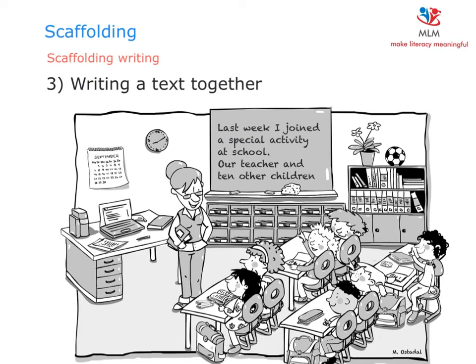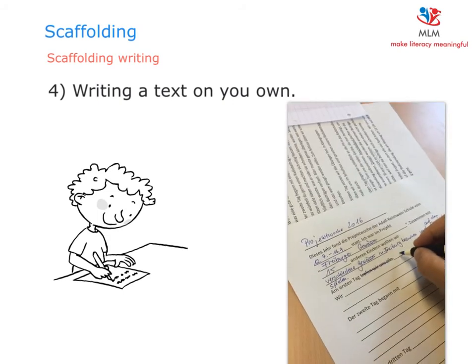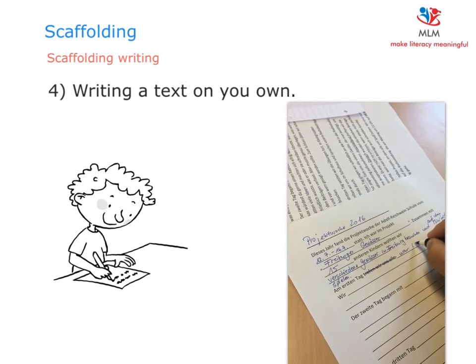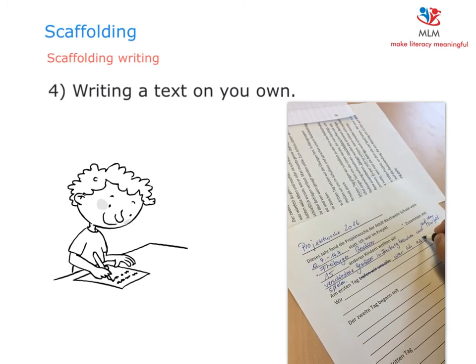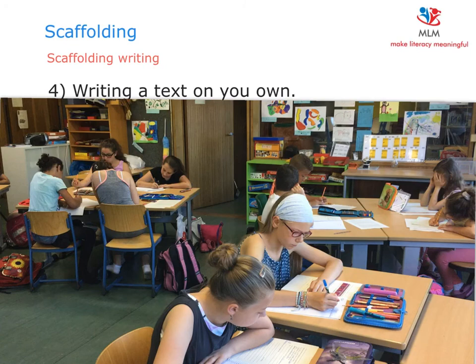The third step is to write a text together and to remind your students of the genre-specific aspects of this text. The last step is that students write their own text. Some of them might still get some extra support to do that, while others might be fine writing on their own.